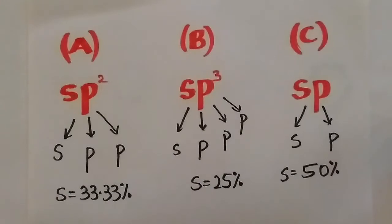Let us compare them. In molecule A, the hybridization is SP2. We have one S and two P orbitals. Therefore the percentage S character is 33.33% for molecule A.